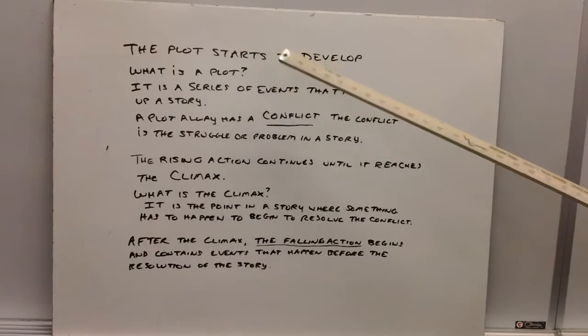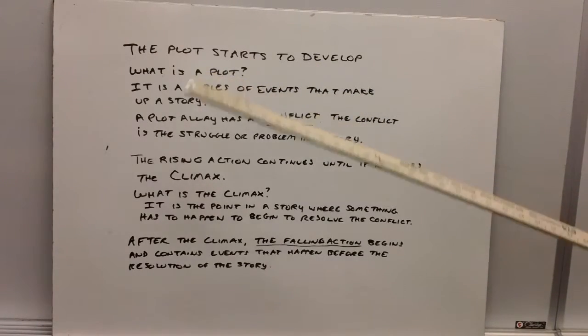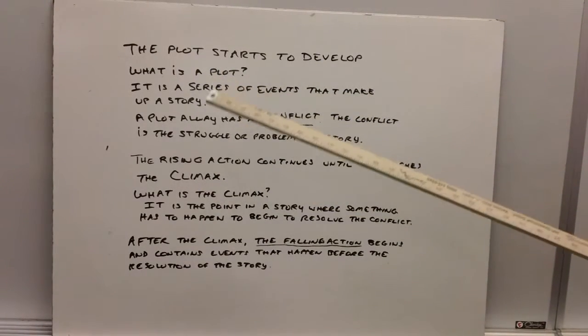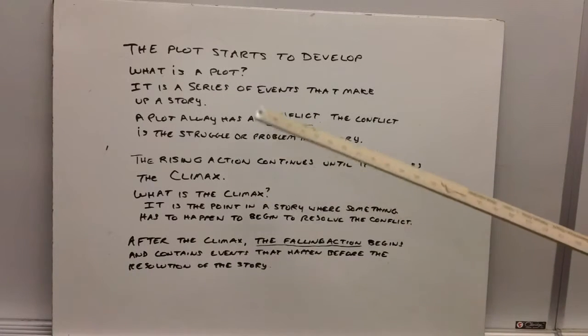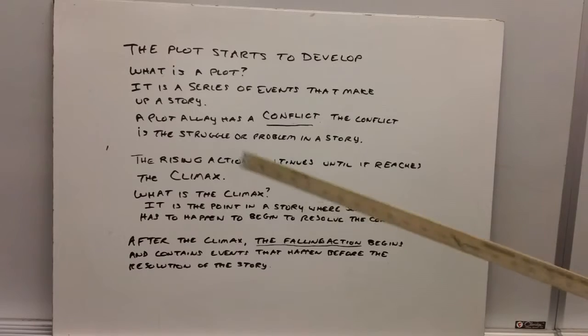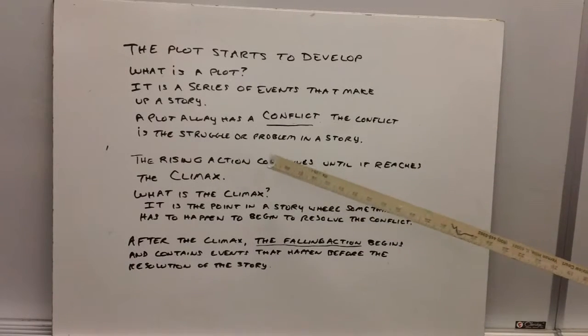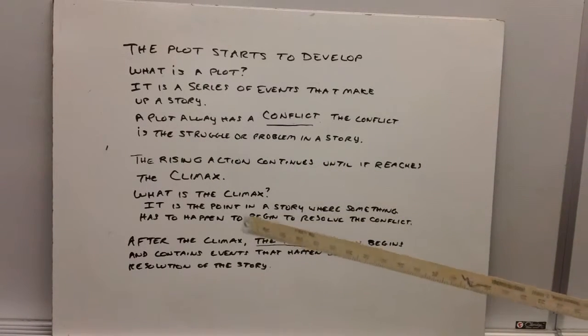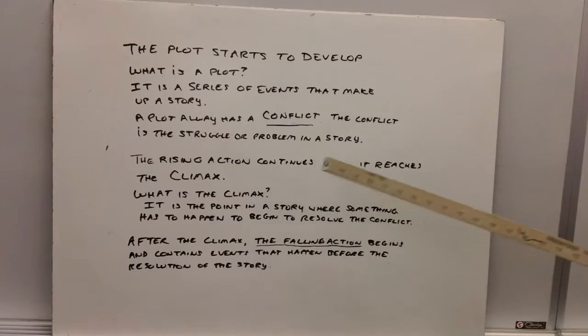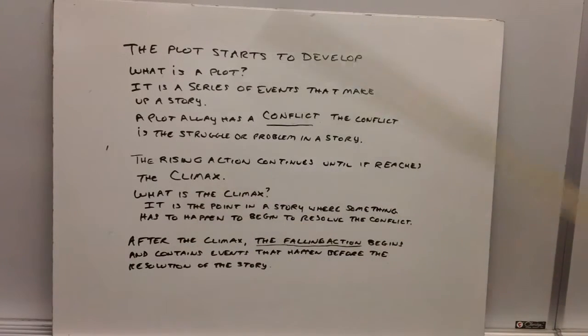The plot starts to develop in the exposition. What is a plot? We all know what a plot is. It's a series of events that make up a story. A plot always has a conflict. And the conflict is the struggle or problem in a story. The rising action continues until it reaches the climax. Remember the top of the pyramid?